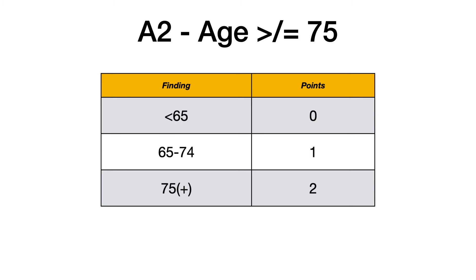Don't worry about two different age scoring systems or calculating age at both the A in CHADS and the A in VASC. Just use A2 — written as CHA2DS-VASC — as the only place you calculate age. It's A2 because you can score up to two points there. The big takeaway: 75 or older = two points; 65 to 74 = one point; 64 or younger = zero points.